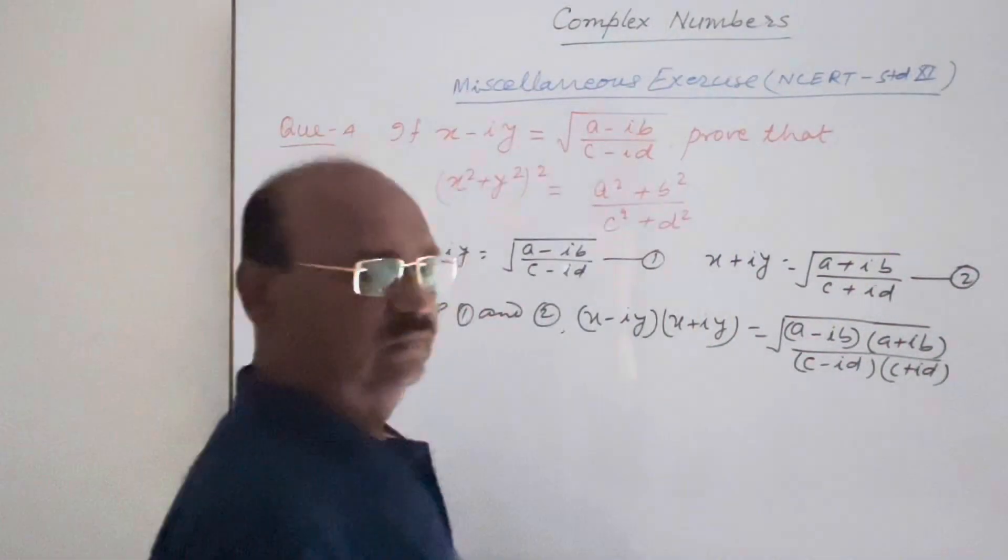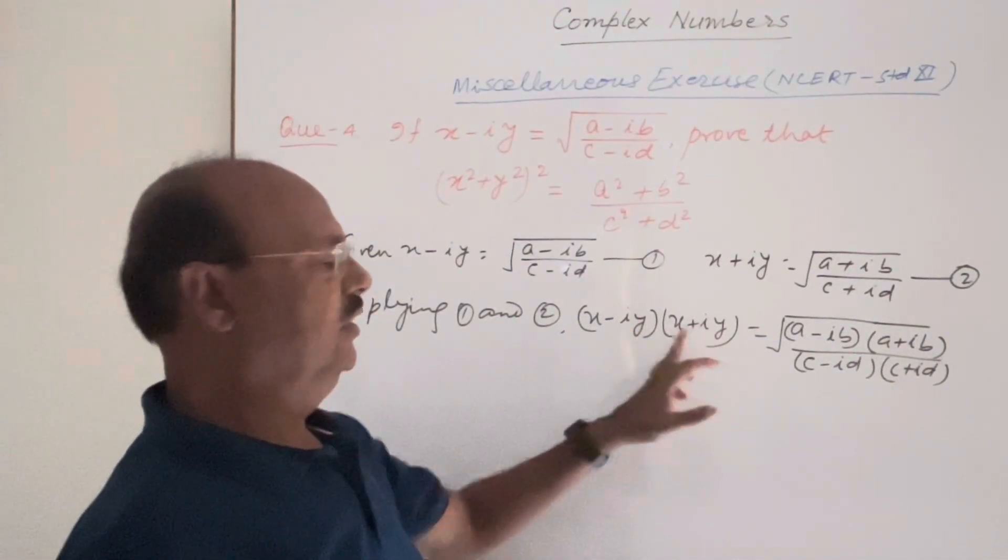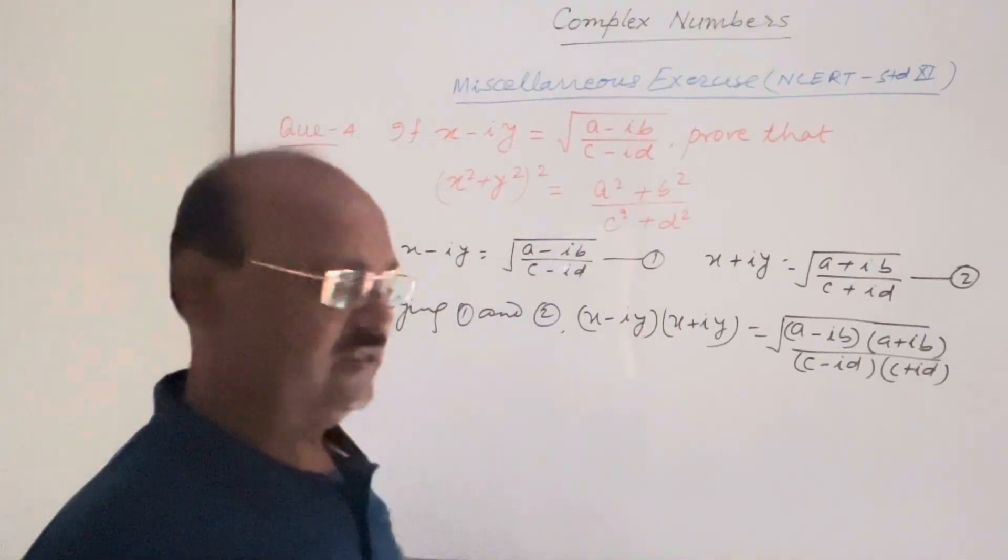Correct? Here in left hand side this is in the form of a minus b into a plus b. You know this is a square minus b square.